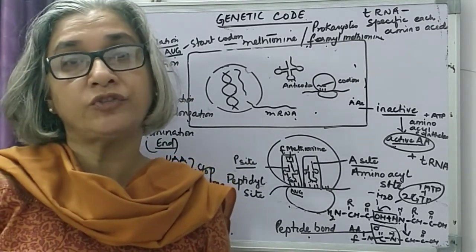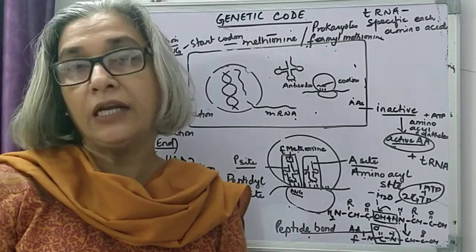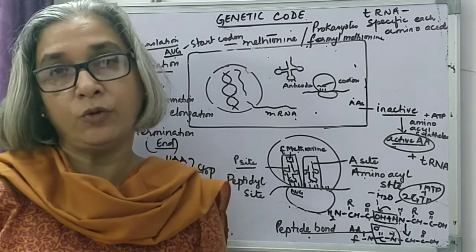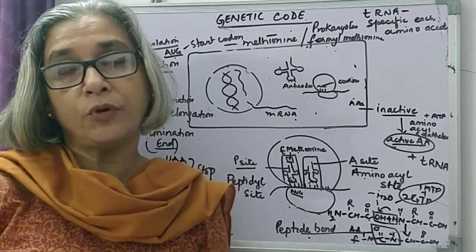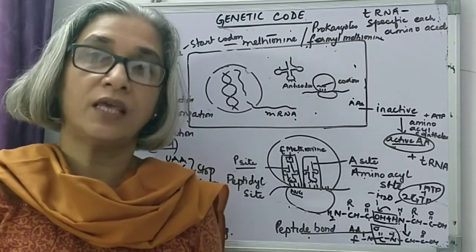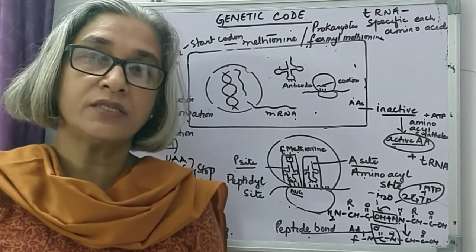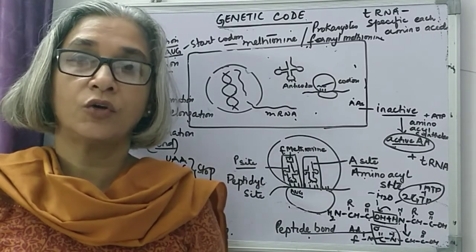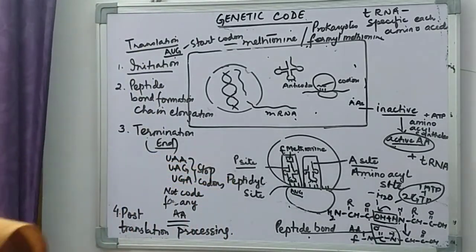The last step is post-translational processing. The polypeptide chain formed is not functional unless it undergoes post-translational changes in the endoplasmic reticulum and the Golgi complex, giving a final structure to the protein molecule — the gene expressed in the form of a protein. This concludes today's class on translation. Read from the book and go through the lecture, and everything will become very clear.